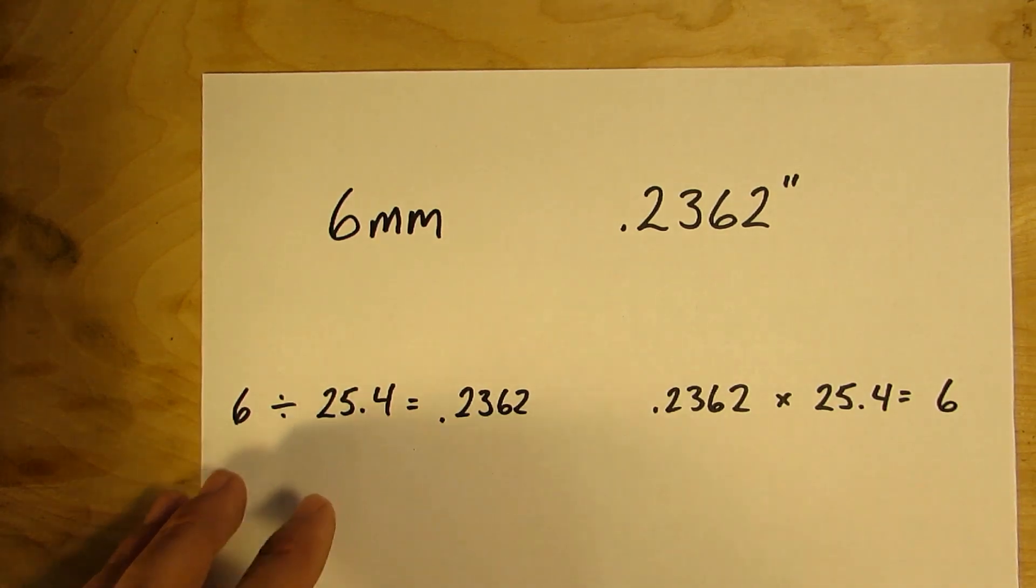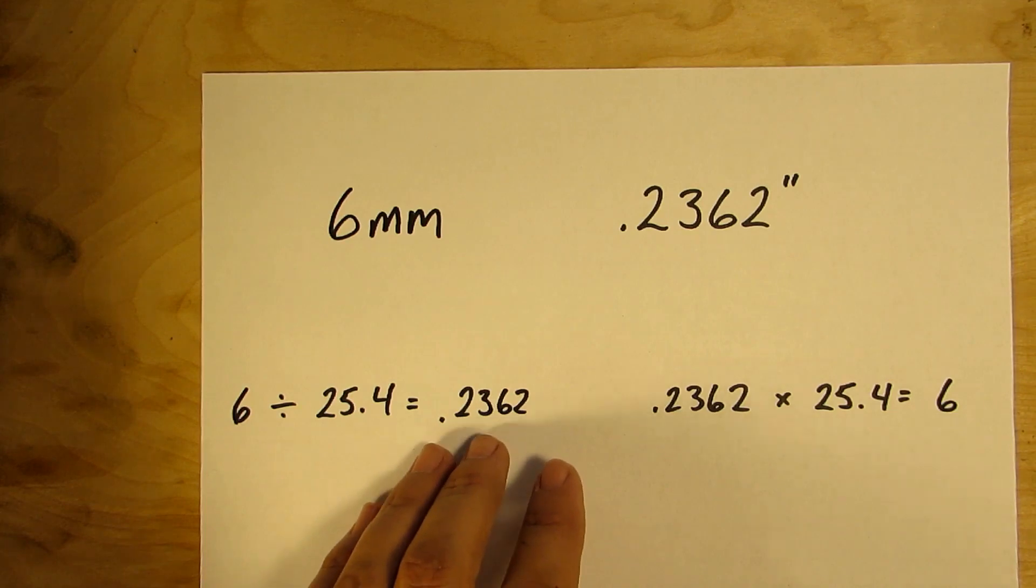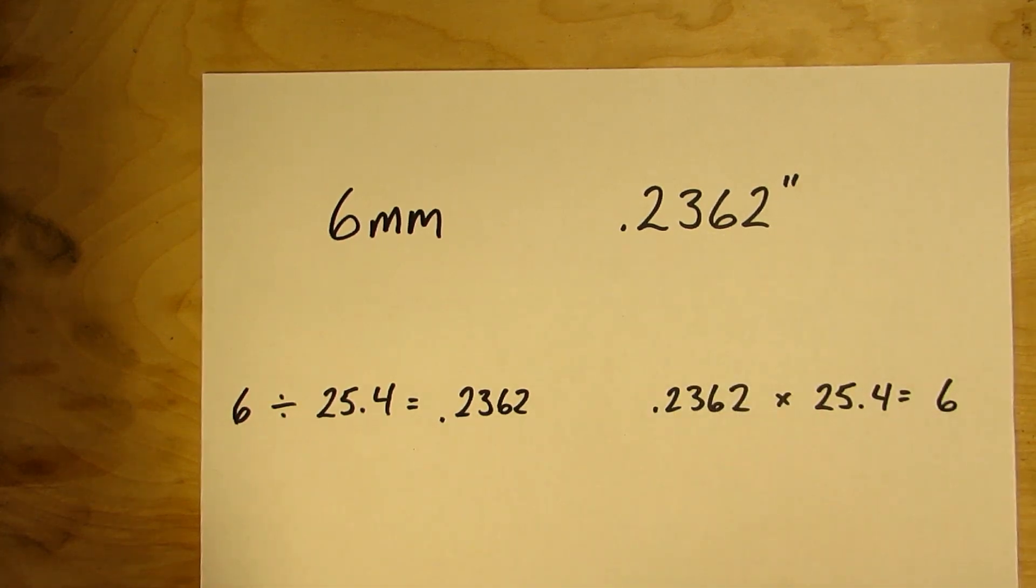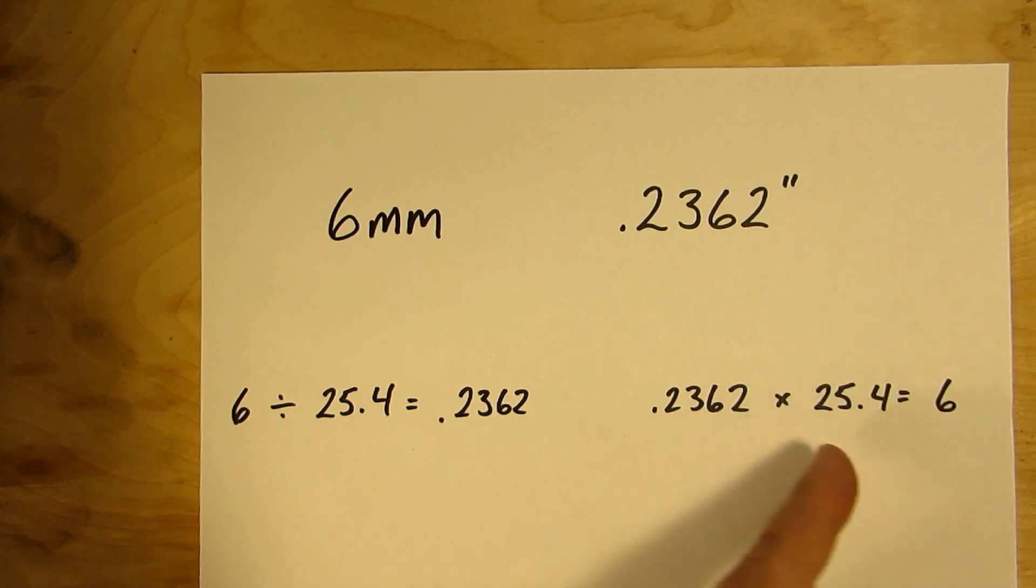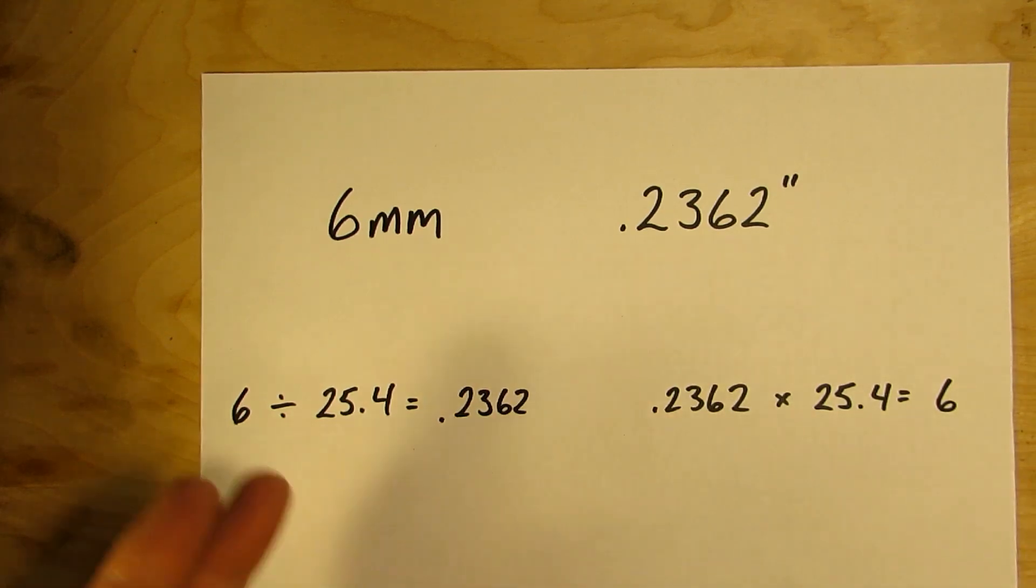So you can see I'm taking six millimeters dividing by 25.4 and I get my 0.2362. And likewise I can take my 0.2362 times 25.4 and get my six millimeters.